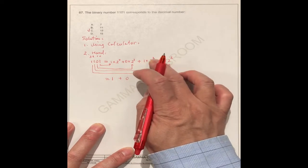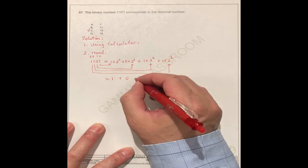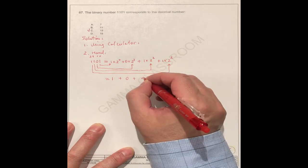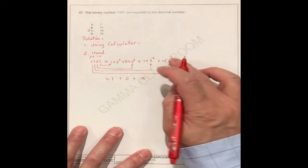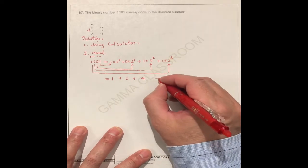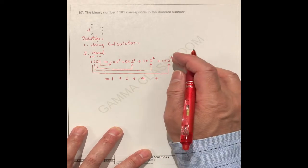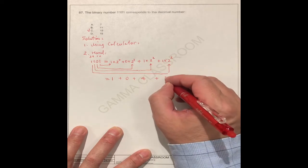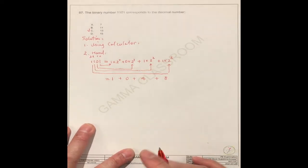How about this one? 2 to the power 2. 2 by 2. 4. Plus 4, right? How about this one? This is 2 cubic is 8. 8.